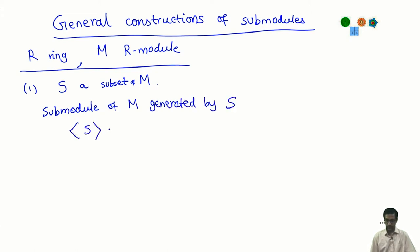Let us give this notation, angled bracket S, which is the following. It is the collection of all the following elements. I look at summation, let us call it alpha i x i, i goes from 1 to n, where n is 0 or more, alpha i comes from my ring R and x i comes from my set S.